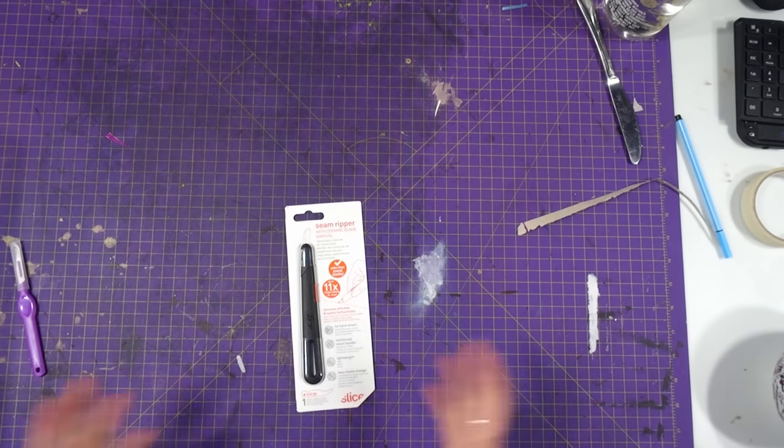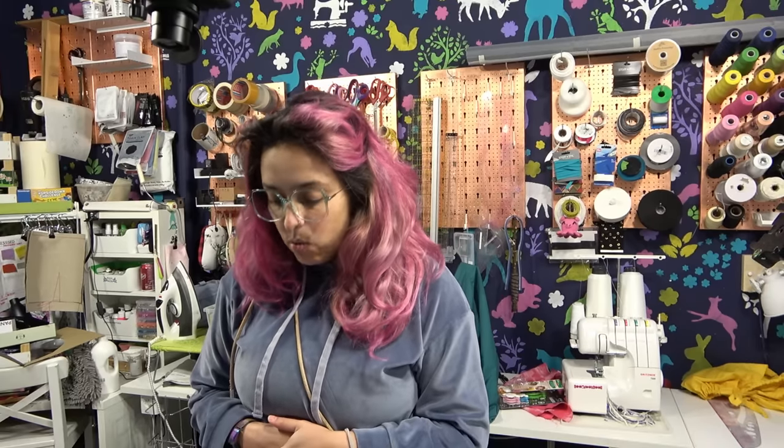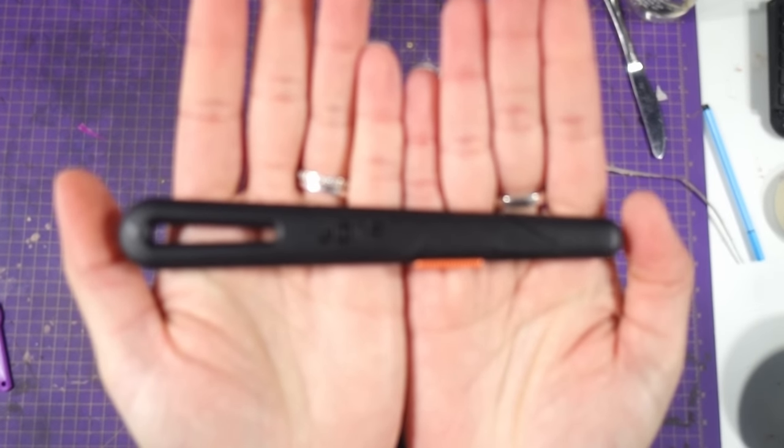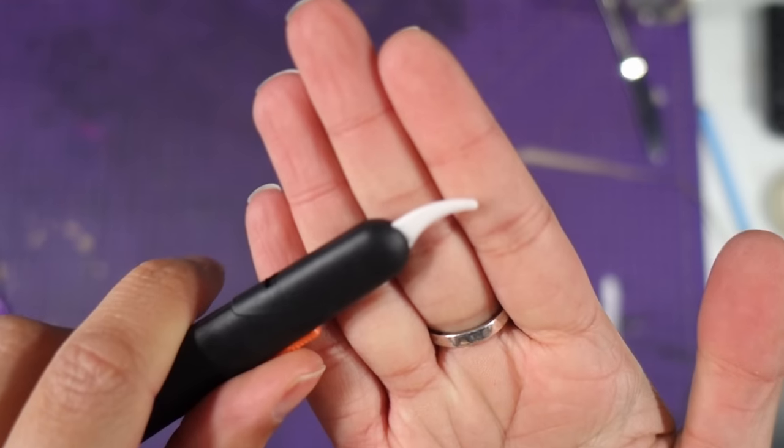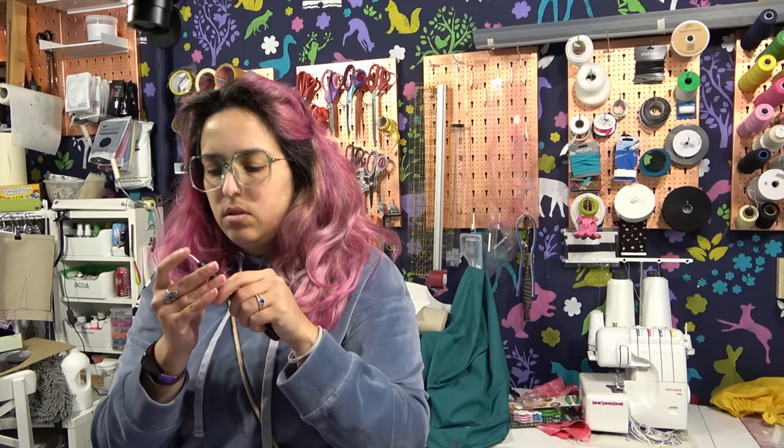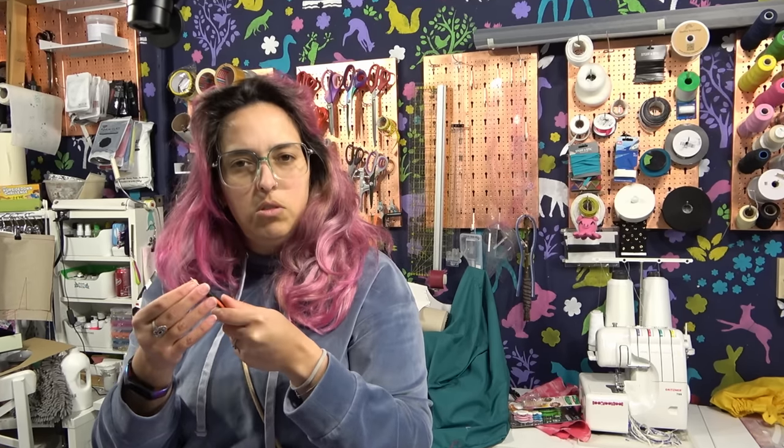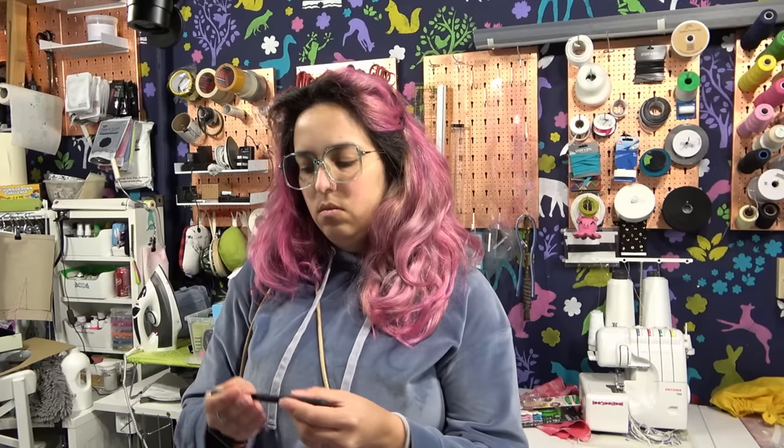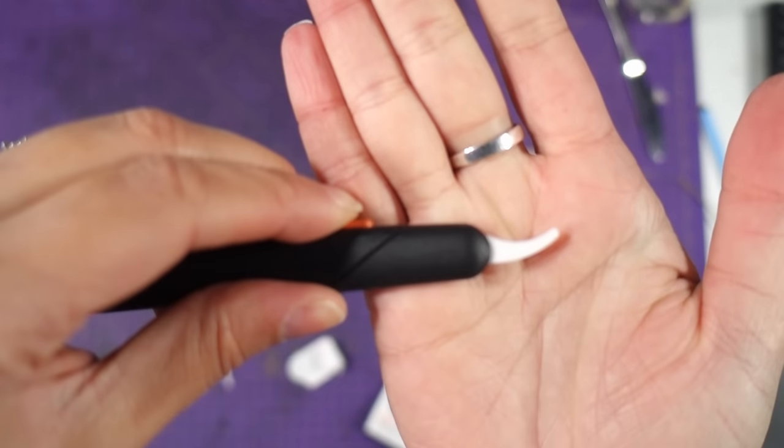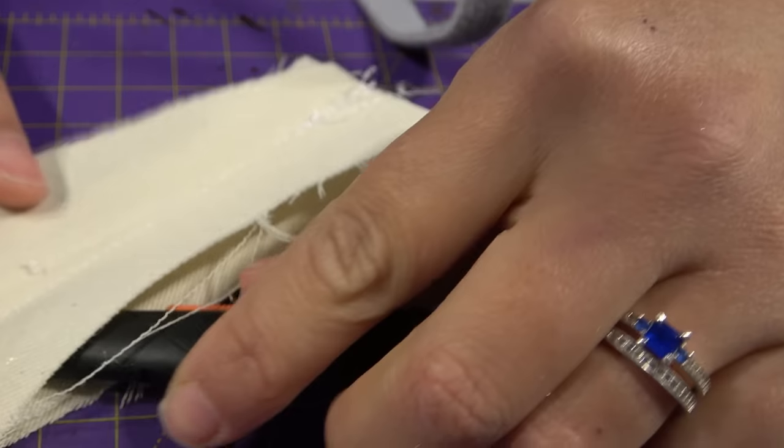And talking about curved seam rippers, I got this one. That is a Slice with ceramic blade seam ripper. Safer than metal blades. Lightweight and easy blade change. Up to 11 times longer lasting than steel. It doesn't have a protective cap, of course, because it's a retractable blade. And there it is. It's not as skinny as the other one. It doesn't have such a sharp point as the other one. And it seems to be sharp, but not as scary sharp as this one. And you have two positions. You can expose just a little bit of it and the total. It's a cat claw. The same one.